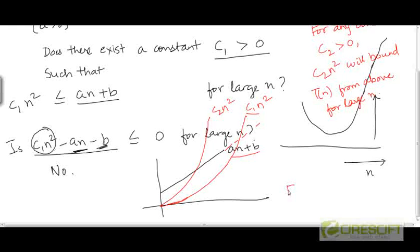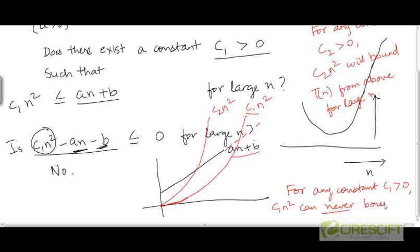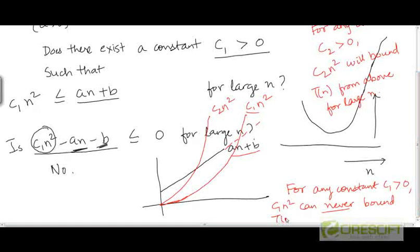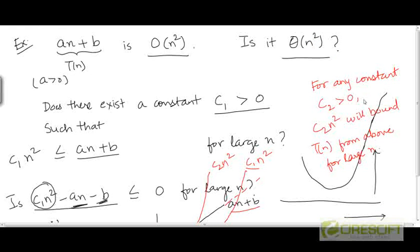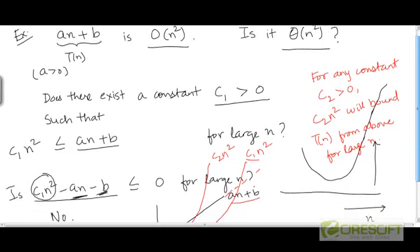The other thing we have argued is that for any constant c₁ we may choose, c₁ times n² can never act as a lower bound for p(n). That is why an plus b is O(n²), but an plus b is not θ(n²).